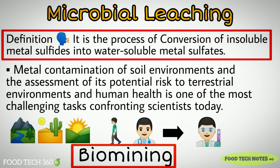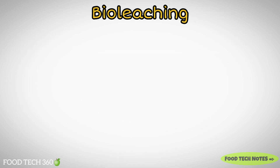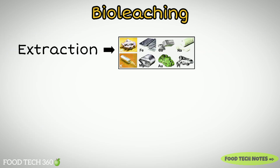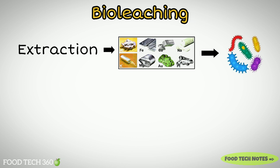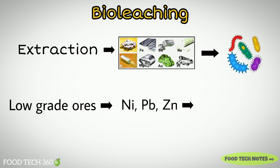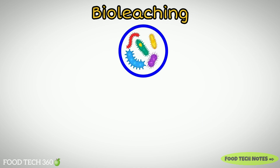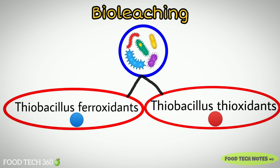The most common biomining method is Bio Leaching. Bio Leaching is the extraction of metals with the use of microorganisms. Low-grade ores contain a significant amount of nickel, lead and zinc ores which could be processed by microbial leaching. The most common microorganisms used for Bio Leaching are Thiobacillus ferroxidans and Thiobacillus thioxidans.